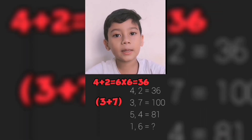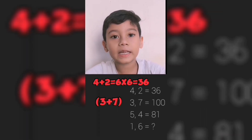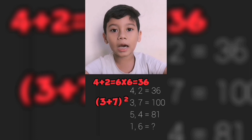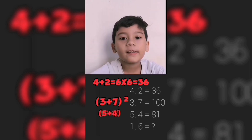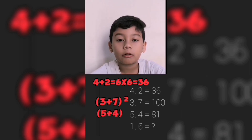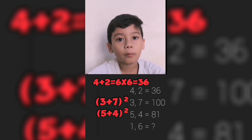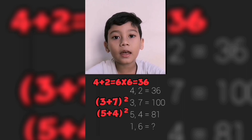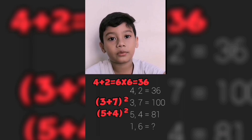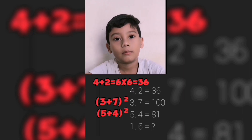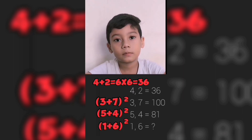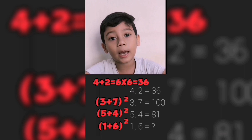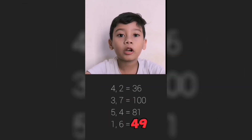Just like 3 plus 7 equals 10, and 10 times 10 is 100. 5 plus 4 equals 9, and 9 times 9 is 81. And last, to get the solution: 1 plus 6 equals 7, and 7 times 7 equals 49.